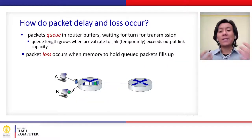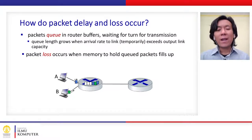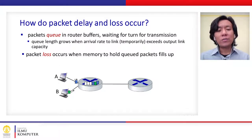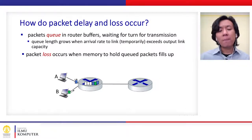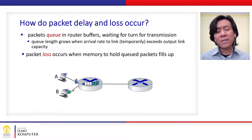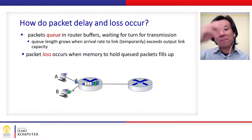Let's recall our previous learning about packet delay and loss. We learned that whenever a packet comes into the router, it will be queued up within a buffer. If the buffer is full, the packet cannot be accepted by the router and the router will simply drop the packet — that situation causes packet loss.